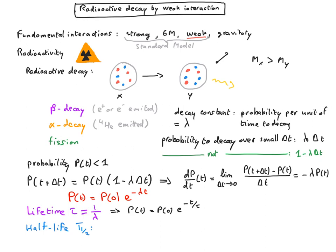Alternatively, we sometimes use the half-life t1 half, after which the probability has been divided by 2. As an exercise, show that t1 half is equal to tau times logarithm of 2.